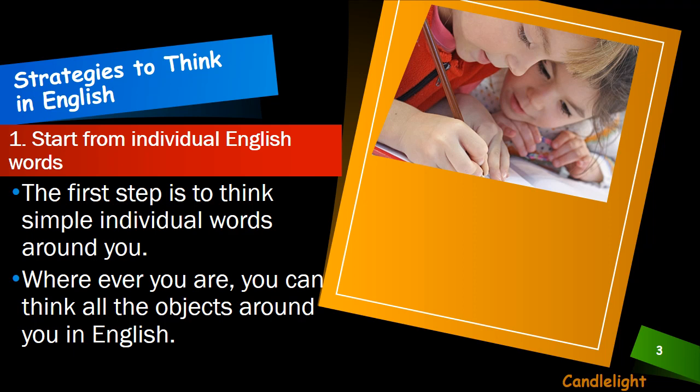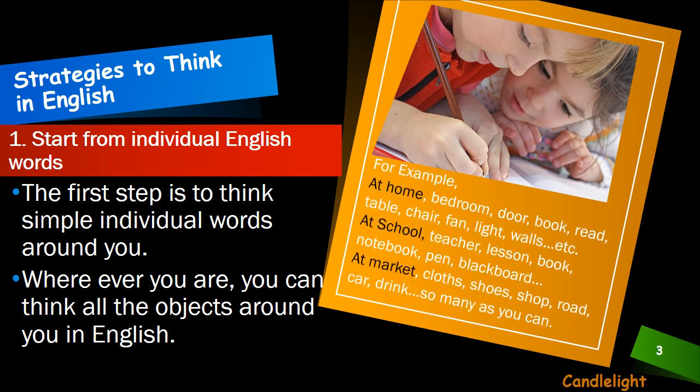Wherever you are, you can think of all the objects around you in English. کہیں بھی آپ کسی بھی environment میں ہیں، آپ کے اردگرد جتنے بھی objects exist کرتے ہیں، آپ ان کا individually English name یاد کریں۔ For example، اگر آپ گھر پر اپنے کمرے میں ہیں — that is called your bedroom۔ آپ کے room میں دروازہ ہے — that is called door۔ آپ کوئی کتاب پڑھ رہے ہیں — book۔ کسی table پر کام کرتے ہیں — that is called table۔ آپ کرسی پر بیٹھے ہیں — that is called chair۔ آپ کے room میں پنکھا ہے — this is called fan۔ کوئی light ہے، bulb ہو سکتا ہے، tube light ہو سکتی ہے۔ اور اگر دیواریں ہیں تو definitely that is called wall۔